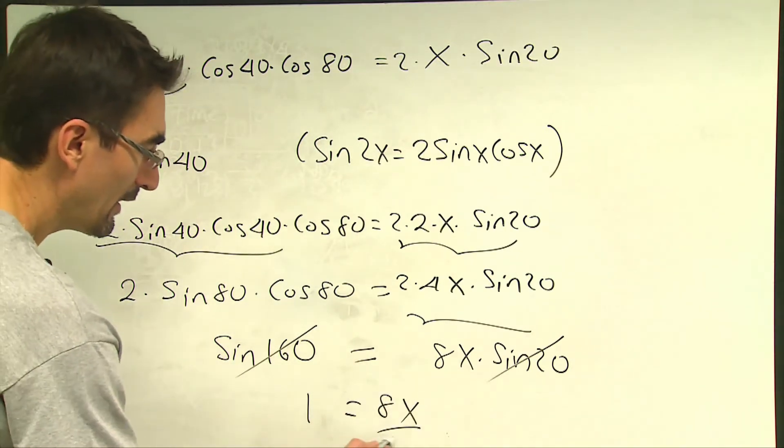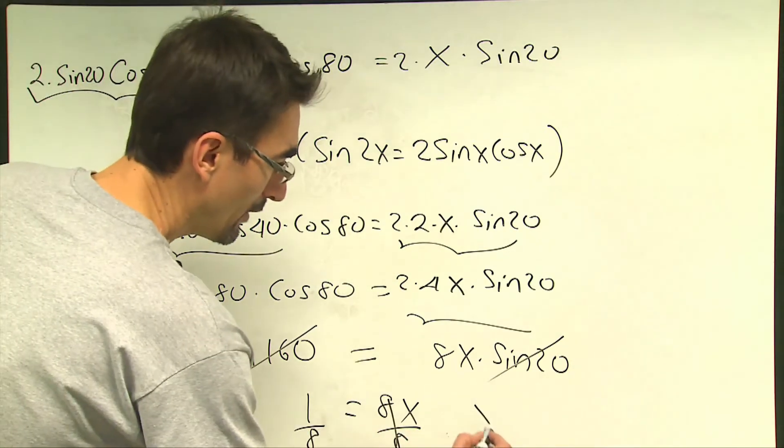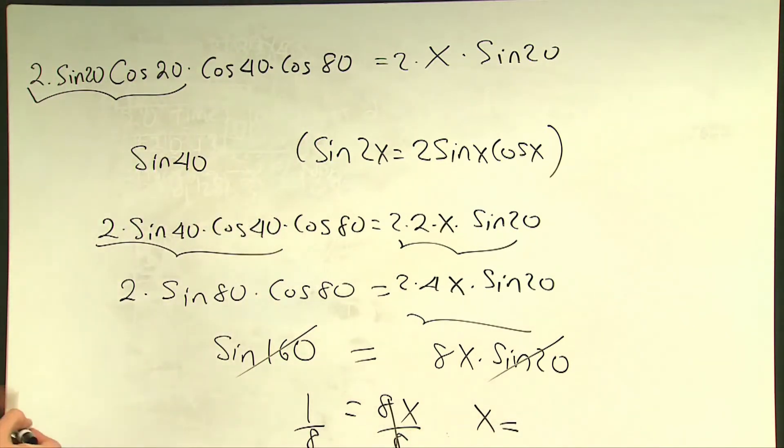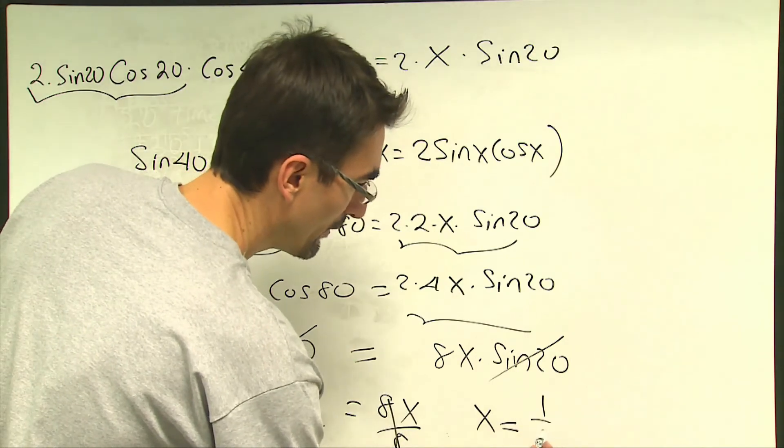And if I divide each side by 8, my expression in the beginning, which I call cosine 20 times cosine 40 times cosine 80 is x will be equal to 1 over 8.